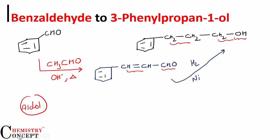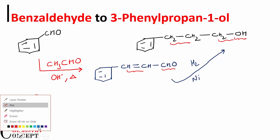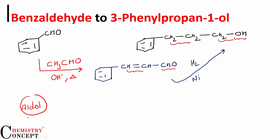Now let's talk about the first step — how do we know what product will form? Here is a trick for aldol condensation: from one of the aldehydes, remove the oxygen, then remove two hydrogens from the alpha carbon of the second aldehyde, and form a double bond between the two. This will be the product formed.